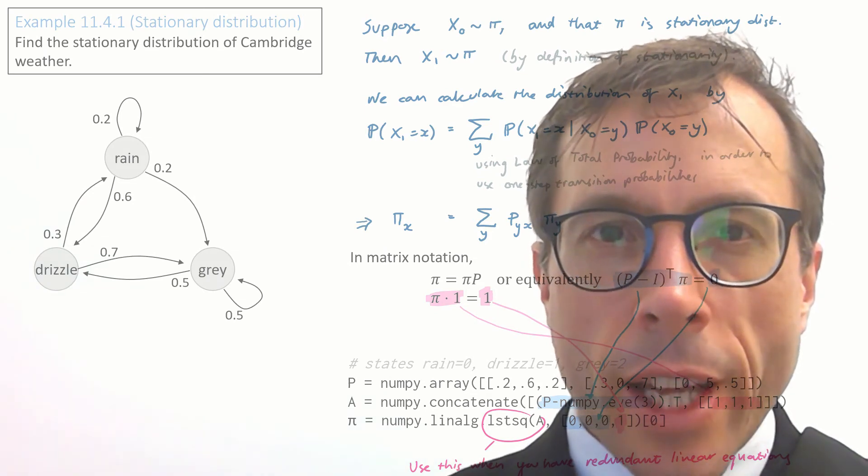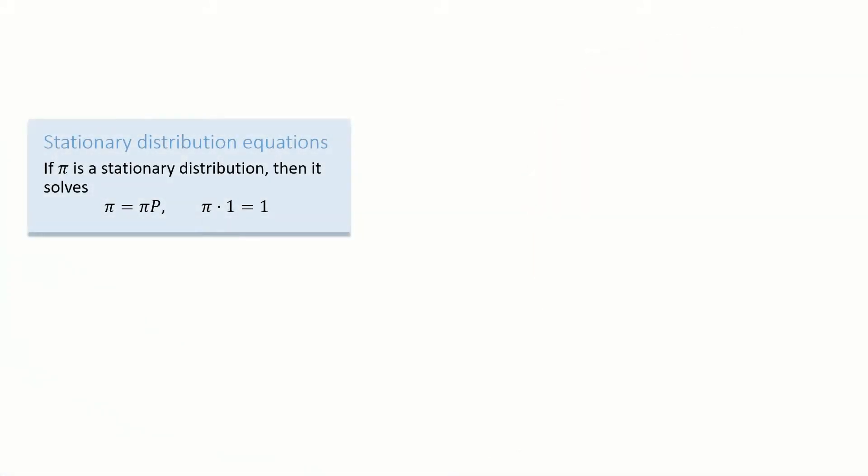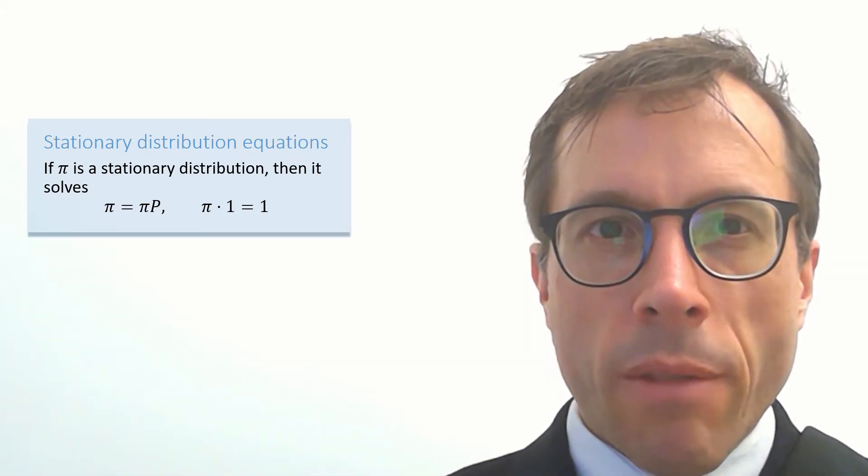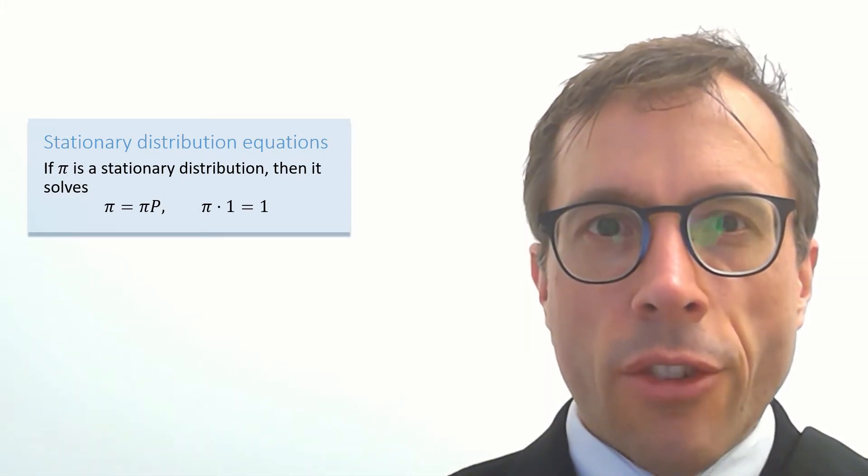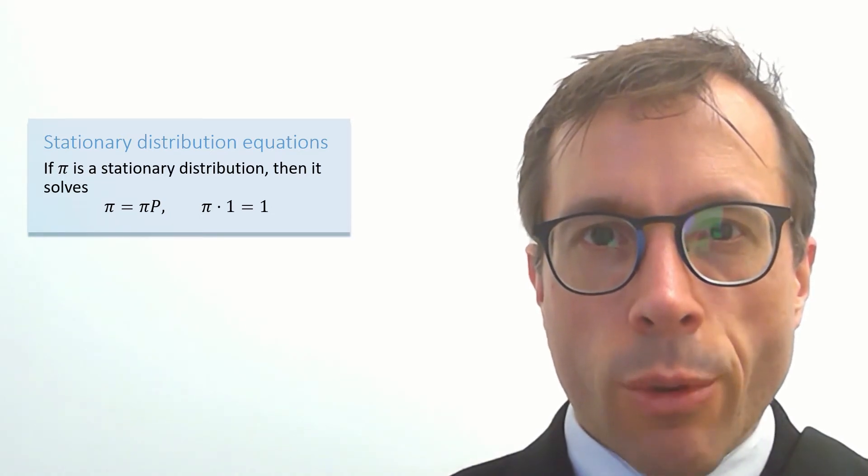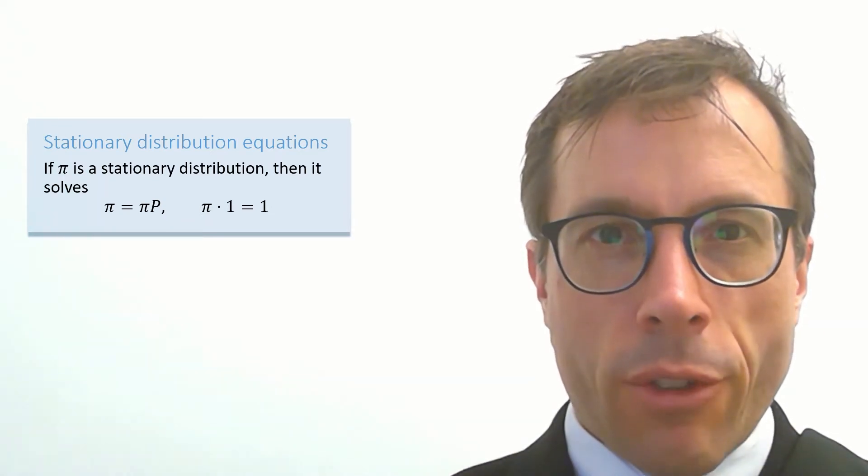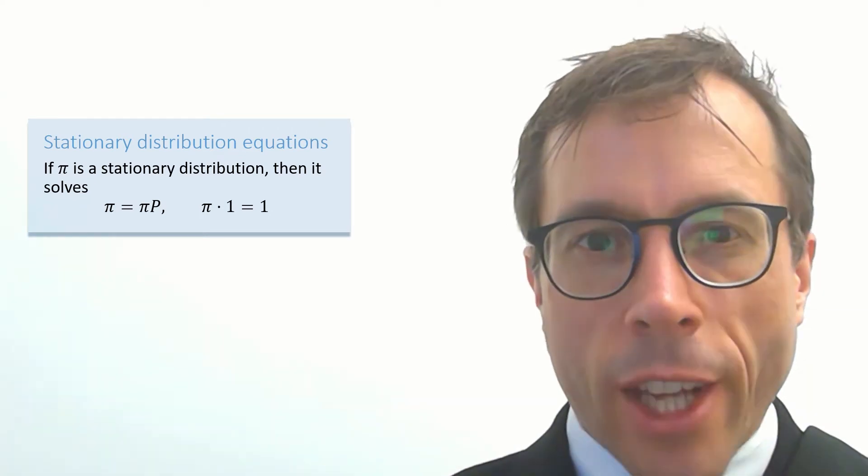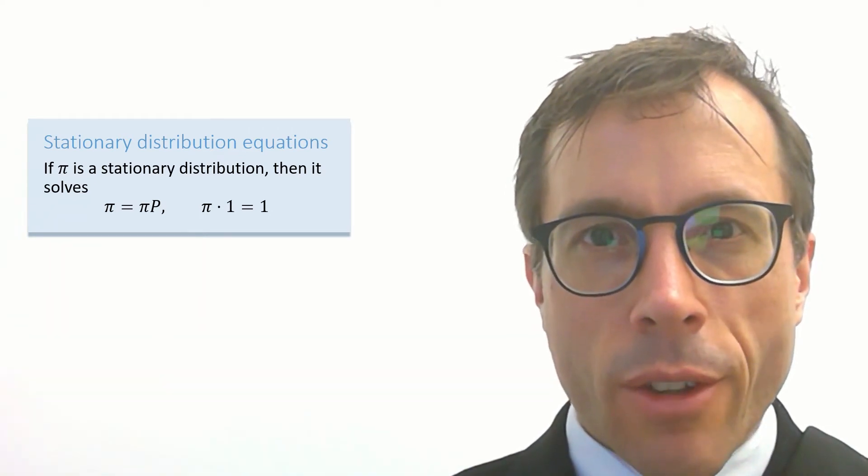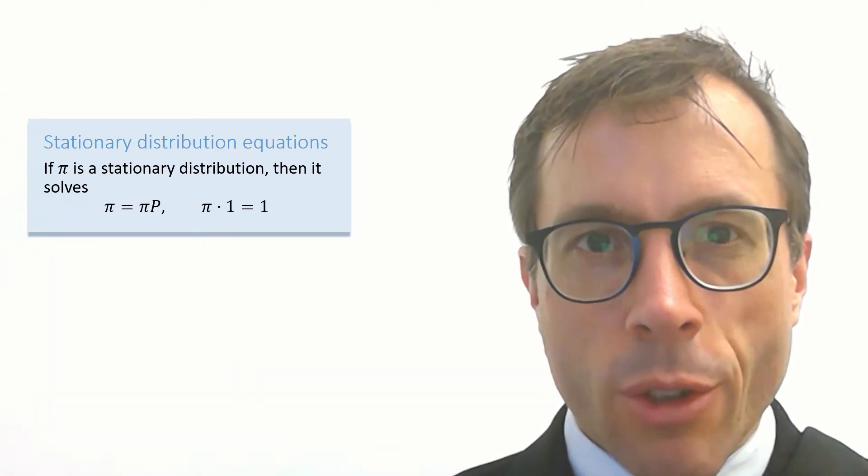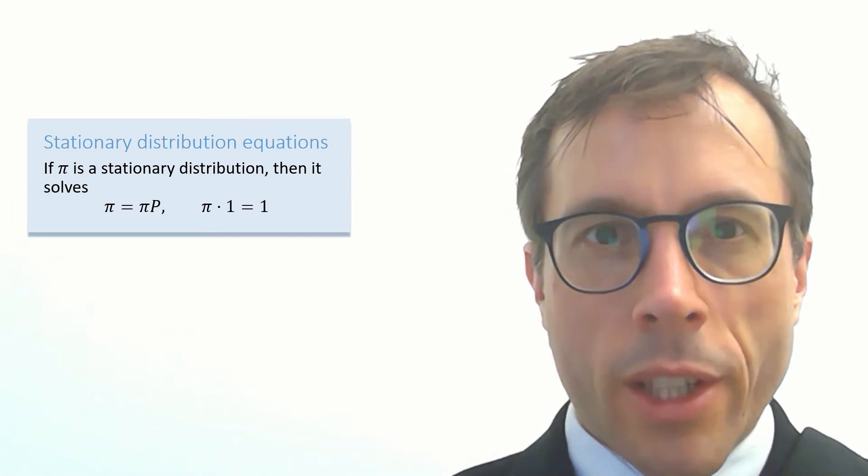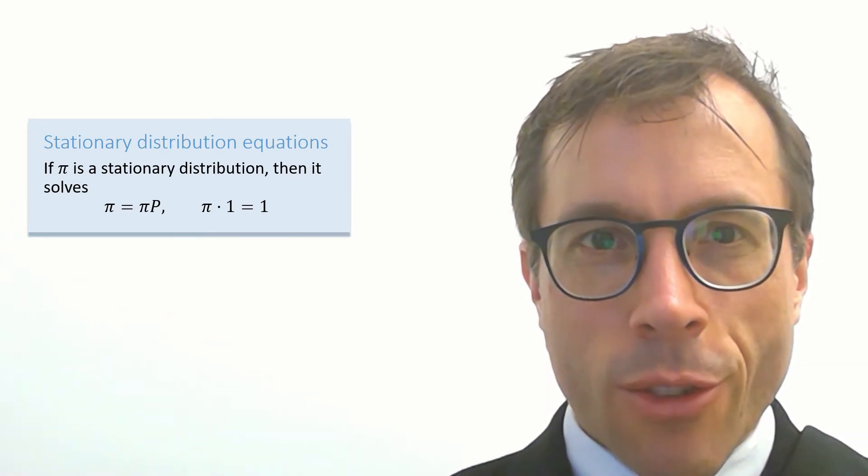What we just did here works for any Markov chain at all. Let's state the general result—pause and have a read. Now I'm going to be very pedantic here. The result says if π is a stationary distribution, then it solves these equations. It doesn't say that these equations can be solved, nor does it say that if they can be solved, then there's a unique solution. What we need is an existence and uniqueness theorem.